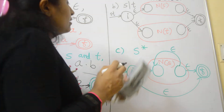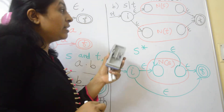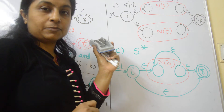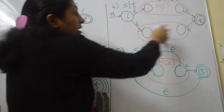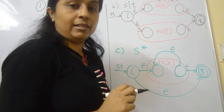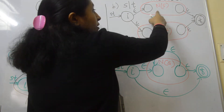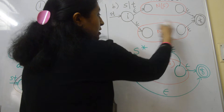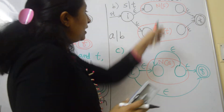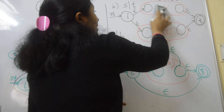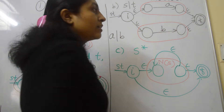For union — suppose S union T — to construct this we need a minimum of six states. From the initial state, give a split on null transitions, and before the final state, take a merge on null transitions. We have six states. In between two of those states, construct NFA of S, and in between the other two states, construct NFA of T. For example, for A union B, construct NFA of A as a single transition and NFA of B as a single transition.